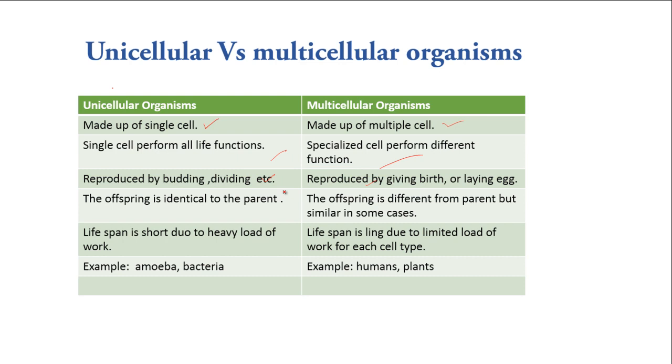In unicellular organisms, the offspring is identical to the parents. In multicellular organisms, offspring is different from parent, but similar in some cases. Life span is short in unicellular organisms due to heavy load of work. Life span is long due to limited load of work for each cell type. Examples of unicellular organisms are amoeba and bacteria. Examples of multicellular organisms are humans and plants.